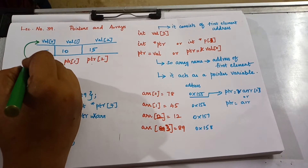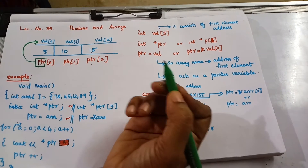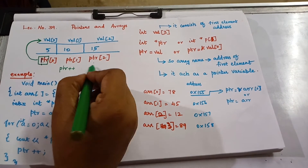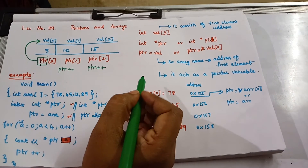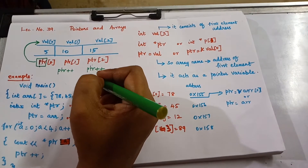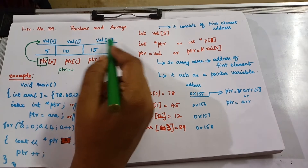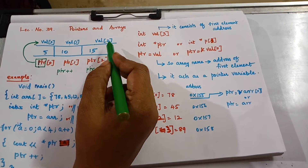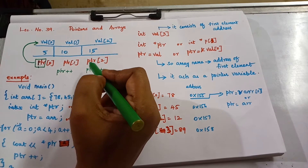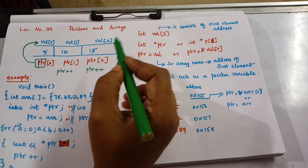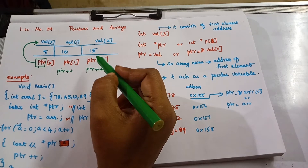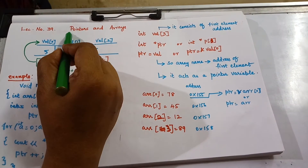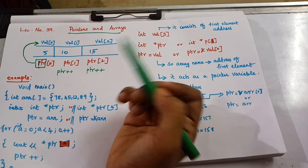The pointer takes the address of the first element, and then the pointer is incremented again and again. In this case, you are going to use pointers and arrays — declared separately in your program. Using both pointer declaration and array declaration at the same time comes under the concept of pointers and arrays.